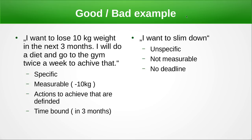A bad goal example is 'I want to slim down after Christmas' — it's unspecific, not measurable, and has no deadline. A good goal example: 'I want to lose 10 kilos of weight in the next three months.' Actions: go on a diet and go to the gym twice a week. It's specific, measurable (you know your current weight minus 10 kilos), has defined actions, and a deadline of end of March.